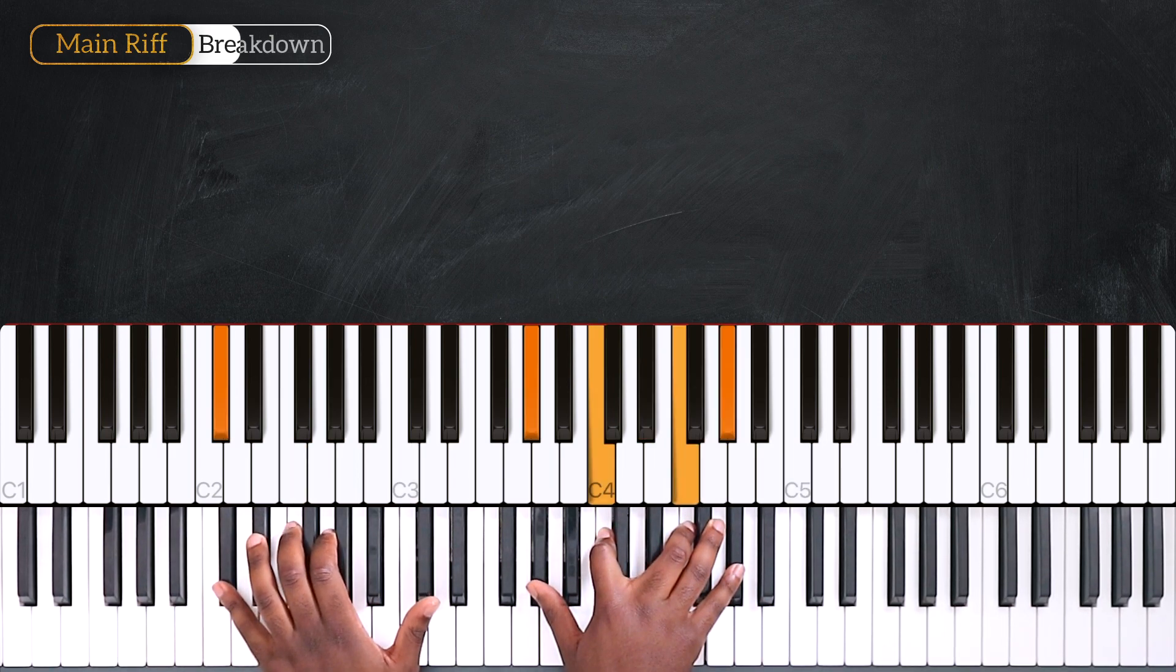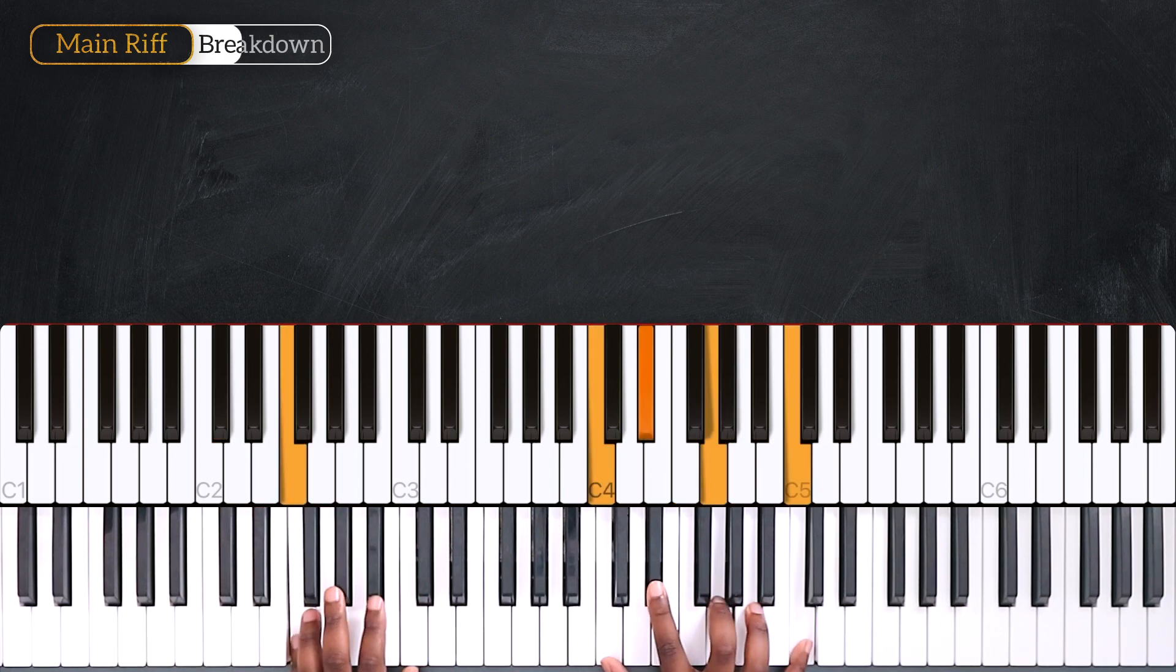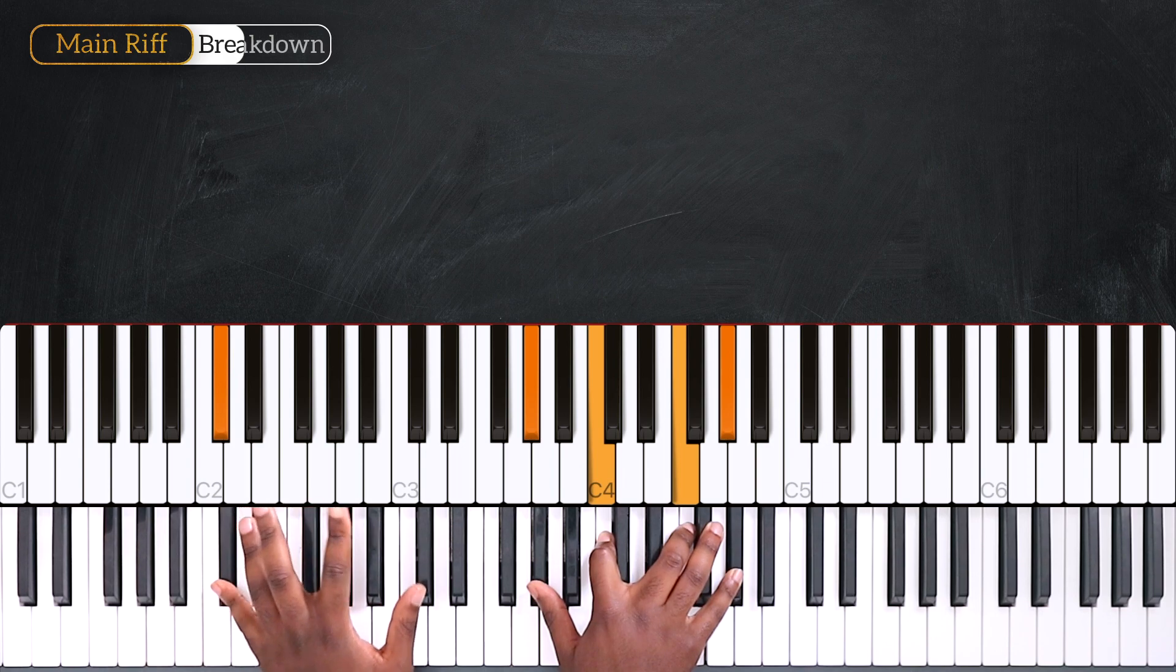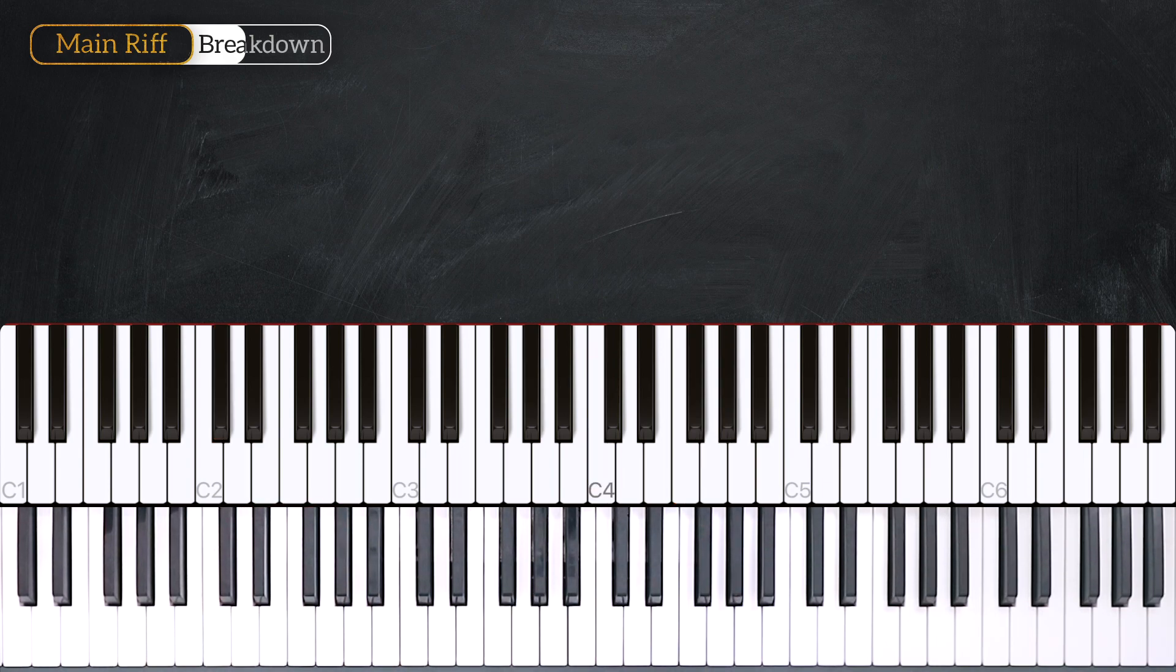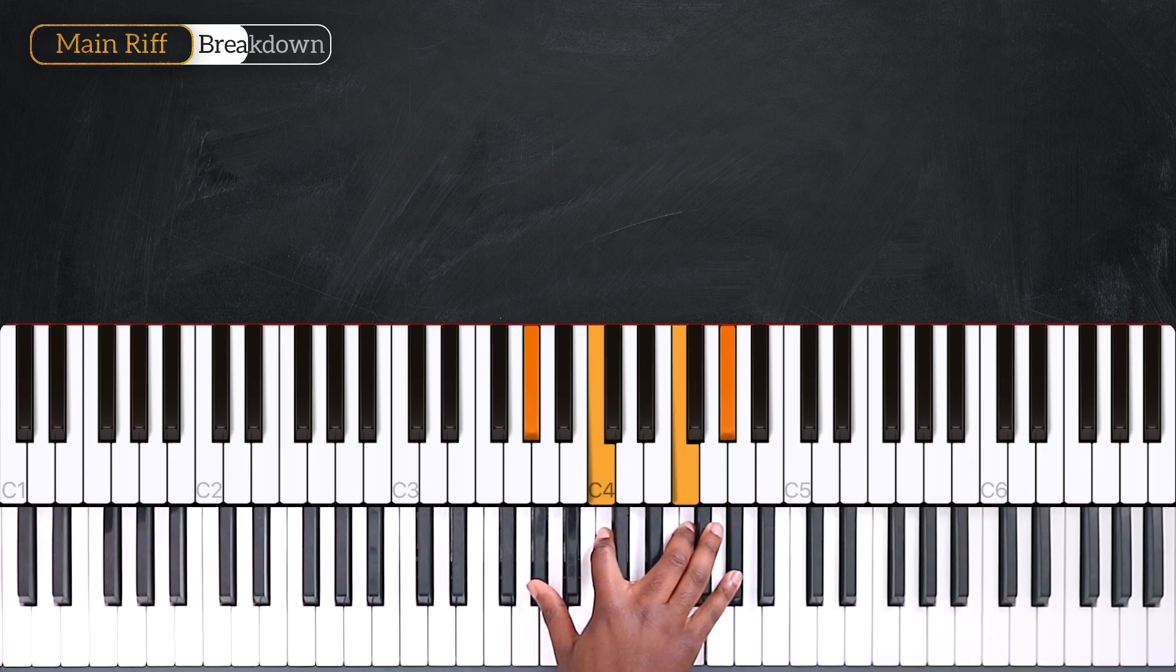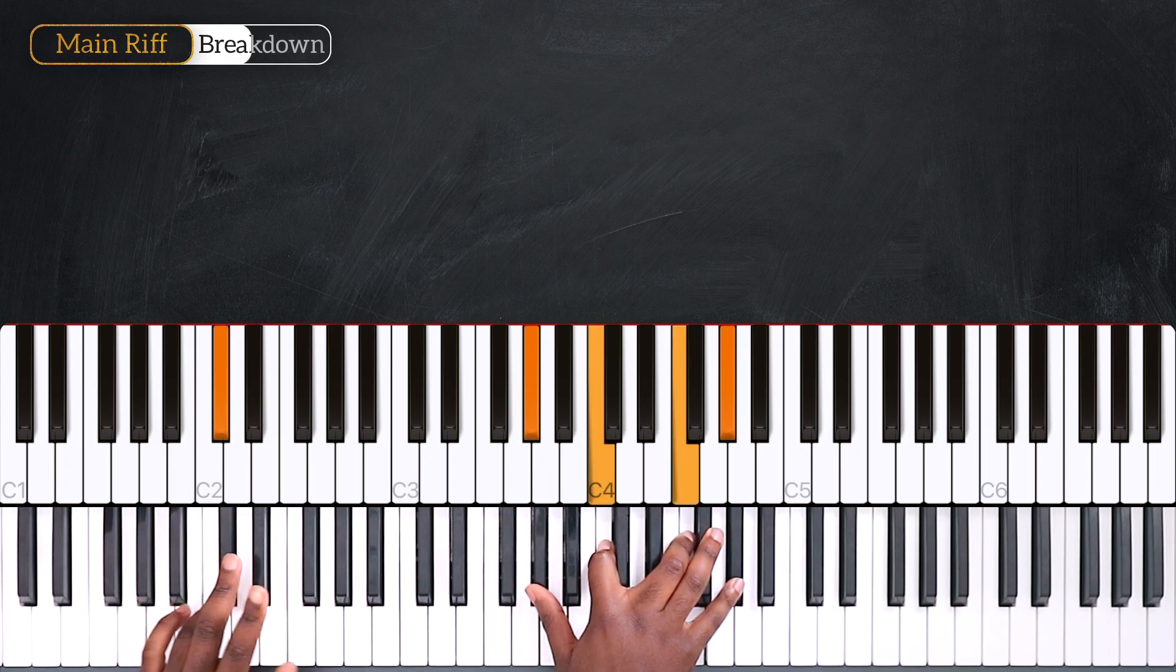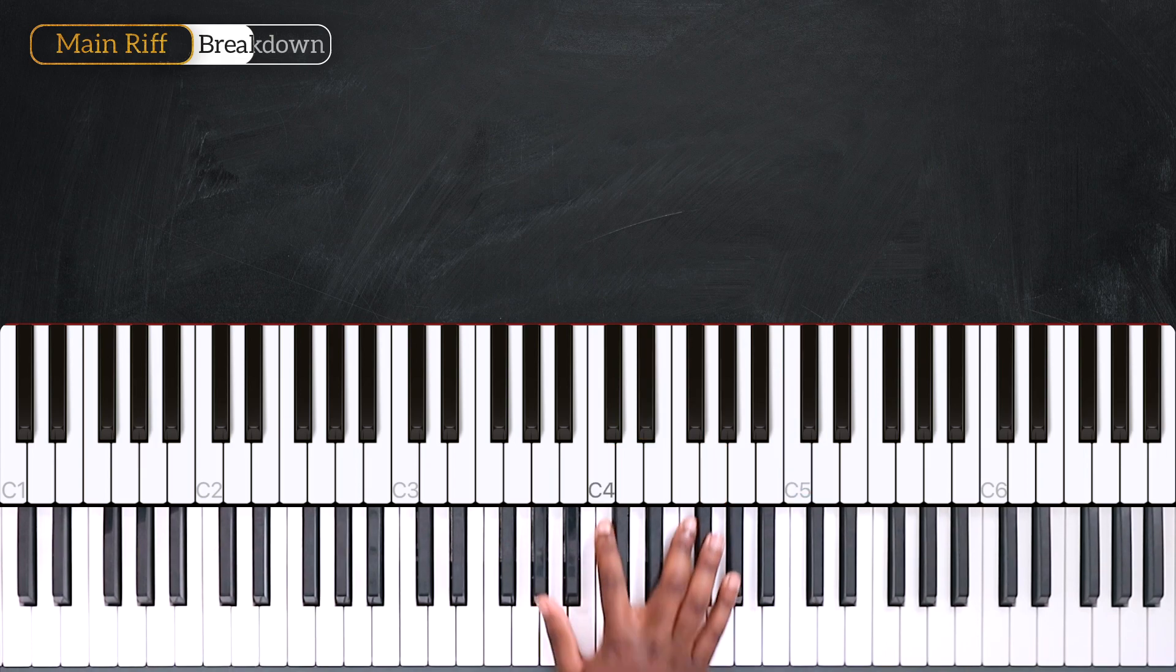And after that I have Db major 7, only for the right hand. I have Db major 7 played on the end of the second beat: one, two and, three, four.